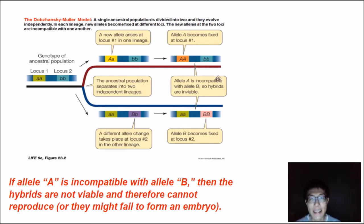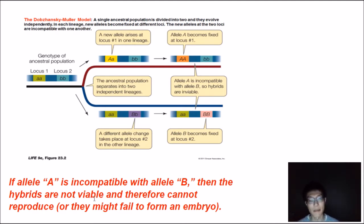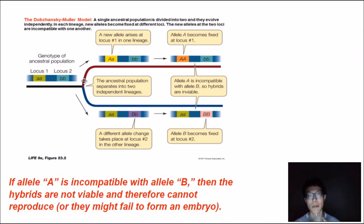Individuals within each population can interbreed properly with each other, but individuals from population one cannot interbreed with individuals from population two. If the big A allele is incompatible with the big B allele, then the hybrids become inviable — they cannot reproduce, or they might even fail as an embryo. As a result, these two populations have a barrier, and that genetic barrier may allow for a speciation event to occur.